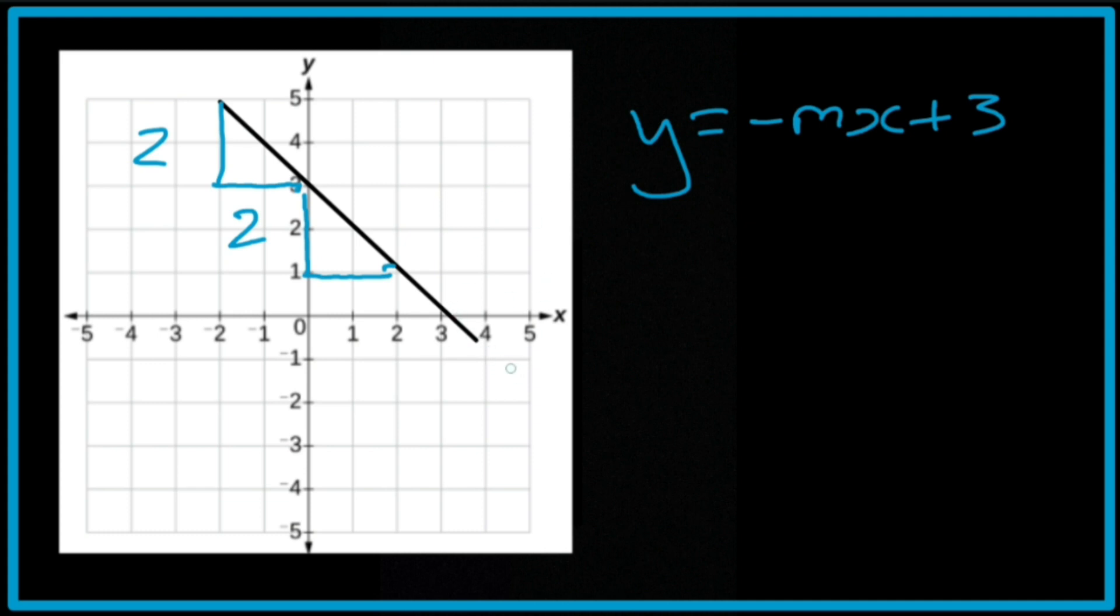And again, if this line was to continue, it would be 2 along and 2 up there as well. It's just the thickness of the line that makes it look like it should be going through at this point. So 2 over 2 is equal to 1.